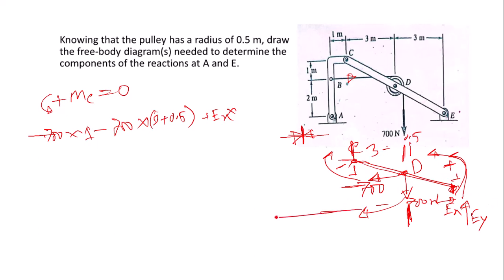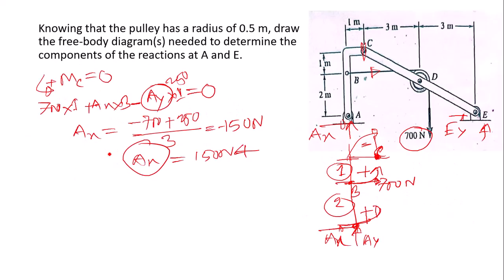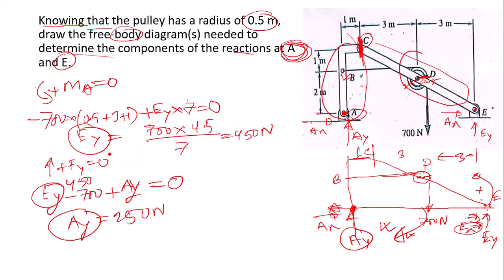Plus E_x times 3, plus E_y times 6 (which is 3 plus 3) equals zero.